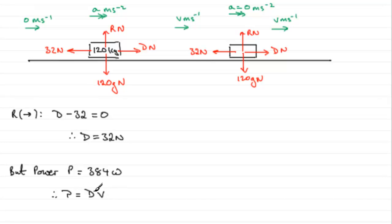So therefore, all we've got to do is substitute our values in. We've got the power, 384, and that's equal to the driving force, 32, times v. To get v, we divide 384 by 32. If you do that, you find you get 12 meters per second.